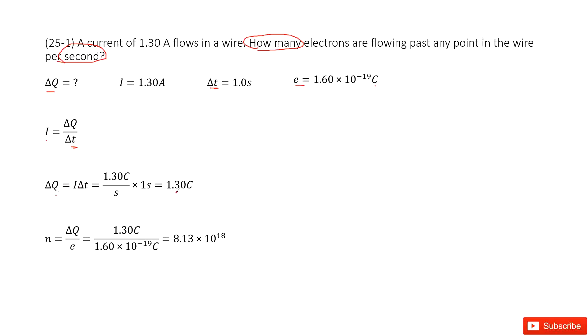Inputting I and Δt, we get ΔQ = 1.30C. Then we divide this charge by the electron's charge e to get the number of electrons: n = ΔQ/e = 1.30C/(1.60 × 10^-19 C) = 8.13 × 10^18. Thank you.